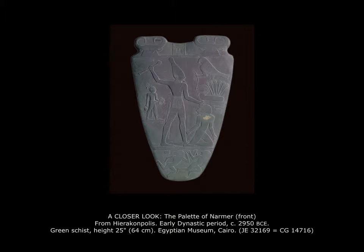Narmer is shown holding a club or scepter and one of his enemies by the forelock, and he's about to club him or raising his hand in triumph — perhaps what's being shown is actually the killing of a sacrificial victim. The little fellow behind Narmer's right arm is his servant holding Narmer's shoes, which suggests Narmer is standing on sacred ground — similar to the story of Moses approaching the burning bush, where God says 'take off your shoes, you're on holy ground.' Narmer is here on holy ground, and so he removes his shoes.